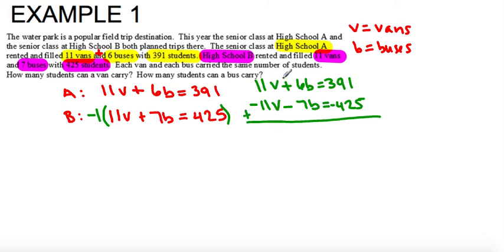So I have 11V minus 11V eliminates, they're inverses. 6B minus 7B comes out to negative 1B, and then I have 391 minus 425 which is negative 34. And I have to get B by itself so I divide both sides by negative 1. So B equals 34.